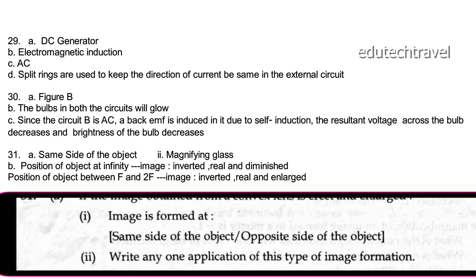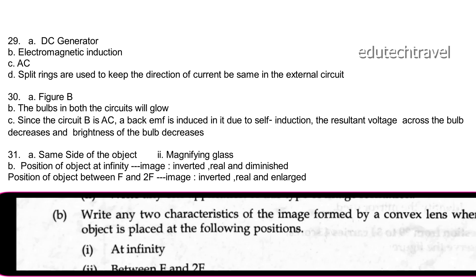Write any two characteristics of the image formed by a convex lens at the following positions. At infinity: image is inverted, real, and diminished, formed at the focus. Between F and 2F: image is inverted, real, and enlarged, formed beyond 2F.